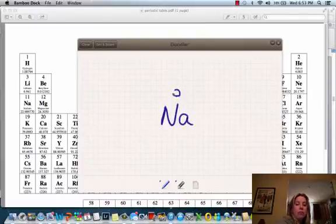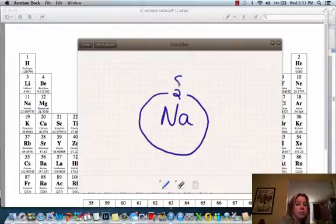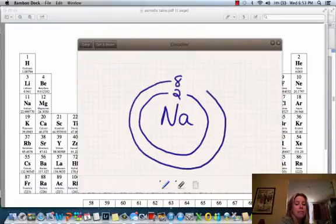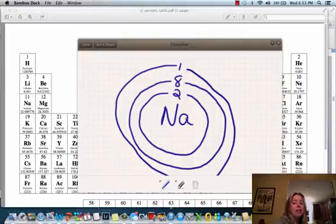So it's going to have 2 here. Now that shell is full, right? So now the next ones are going to spill out into the next orbital, which can hold a maximum of 8, and then there's going to be one more that's going to be in that final one, right? So we can say that sodium has 1 electron in its outermost shell.